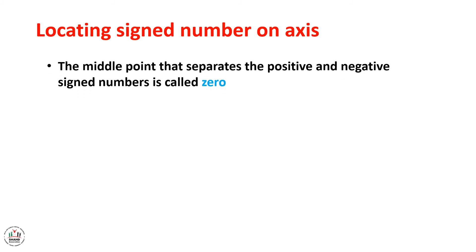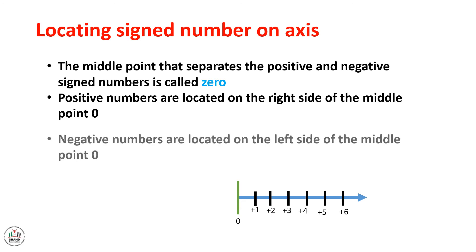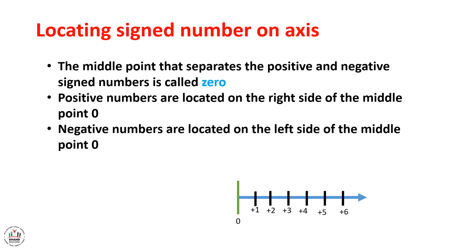First, let's identify the elements of a number axis. The middle point that separates the positive and negative signed numbers is called 0. Positive numbers are located on the right side of the middle point, and the negative numbers are located on the left side of the middle point.